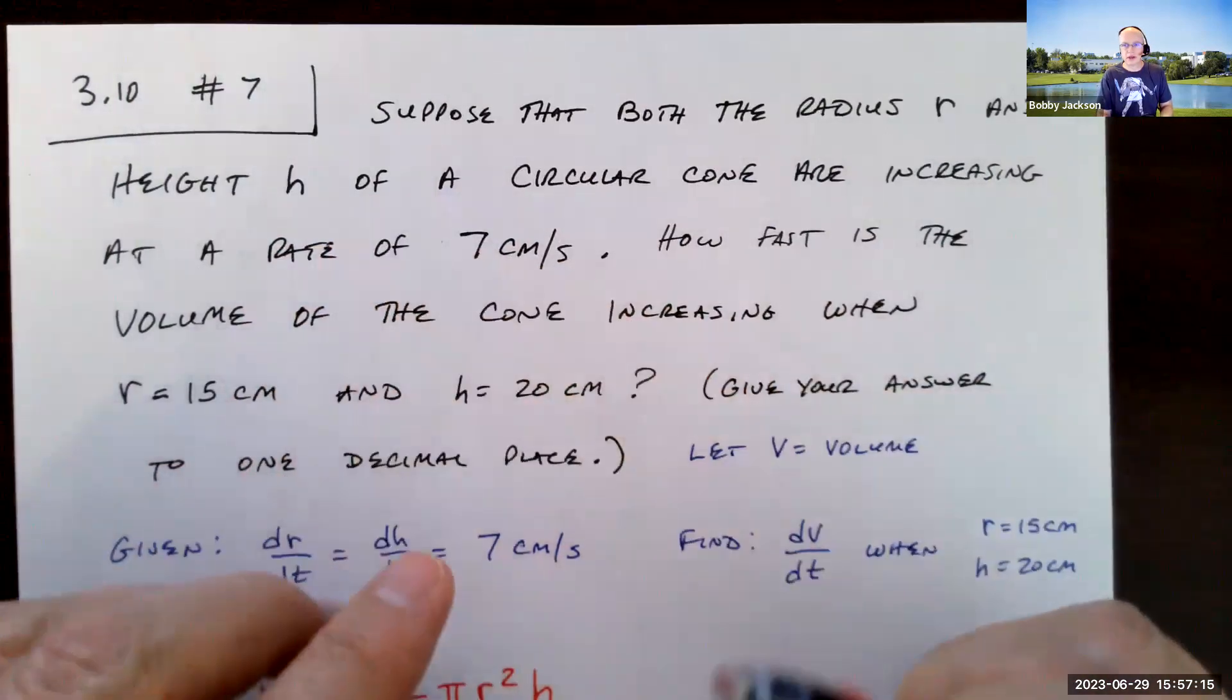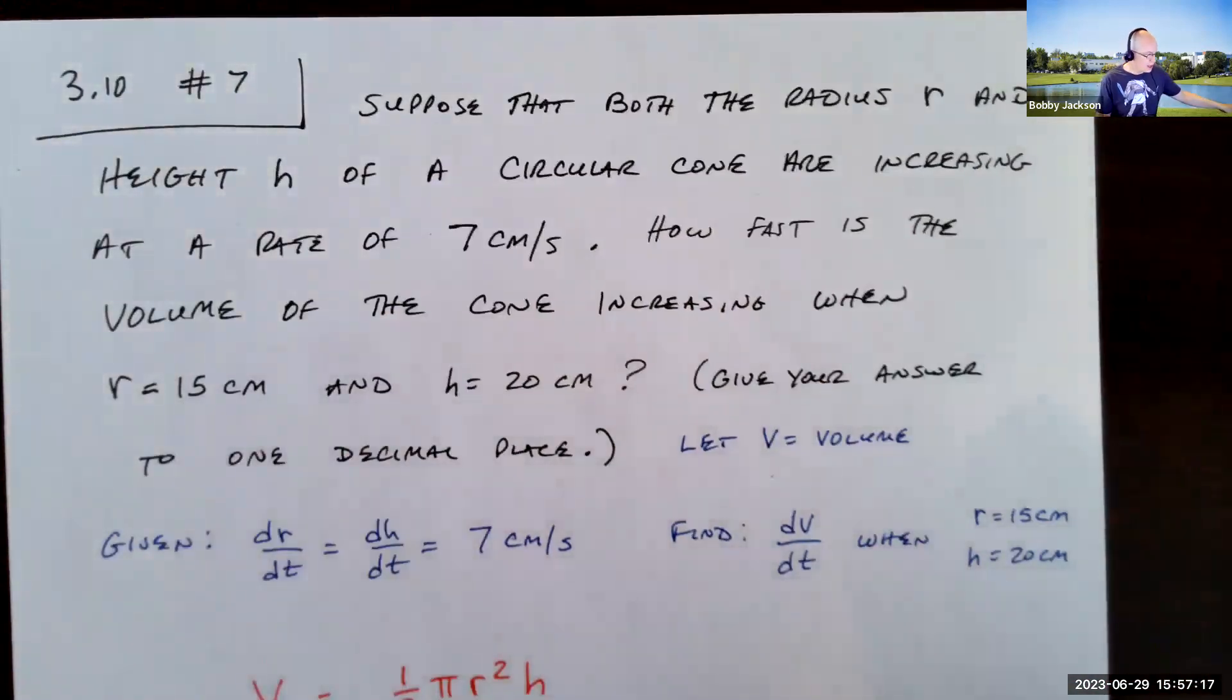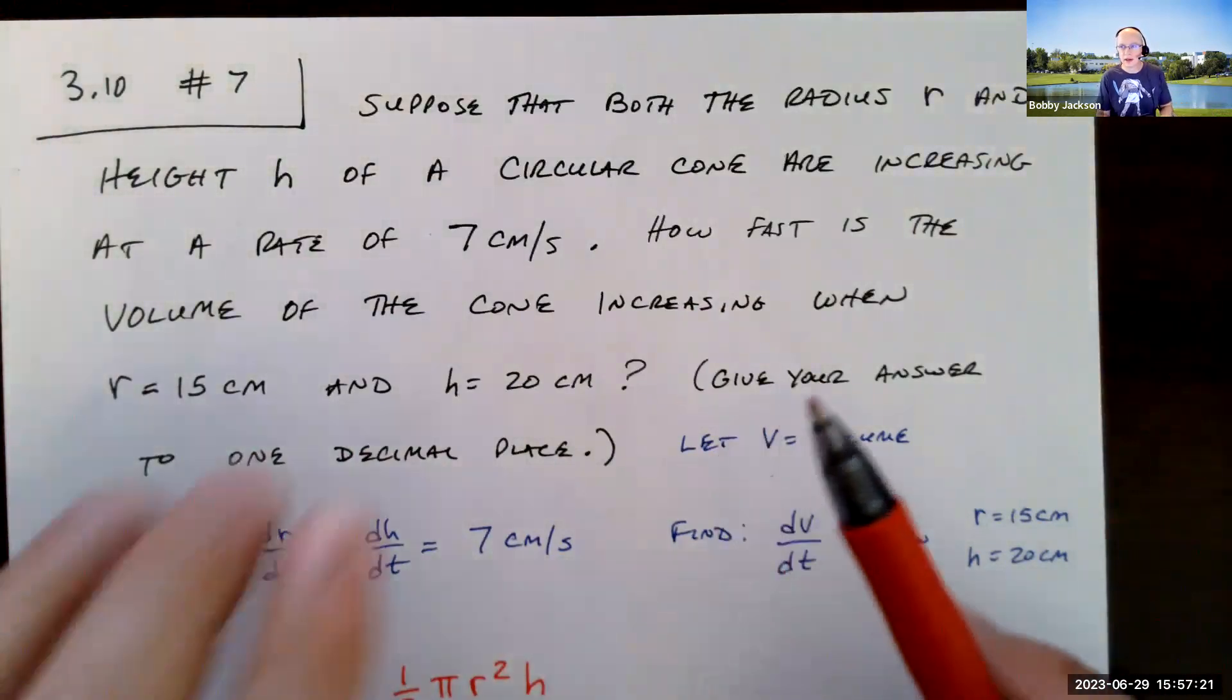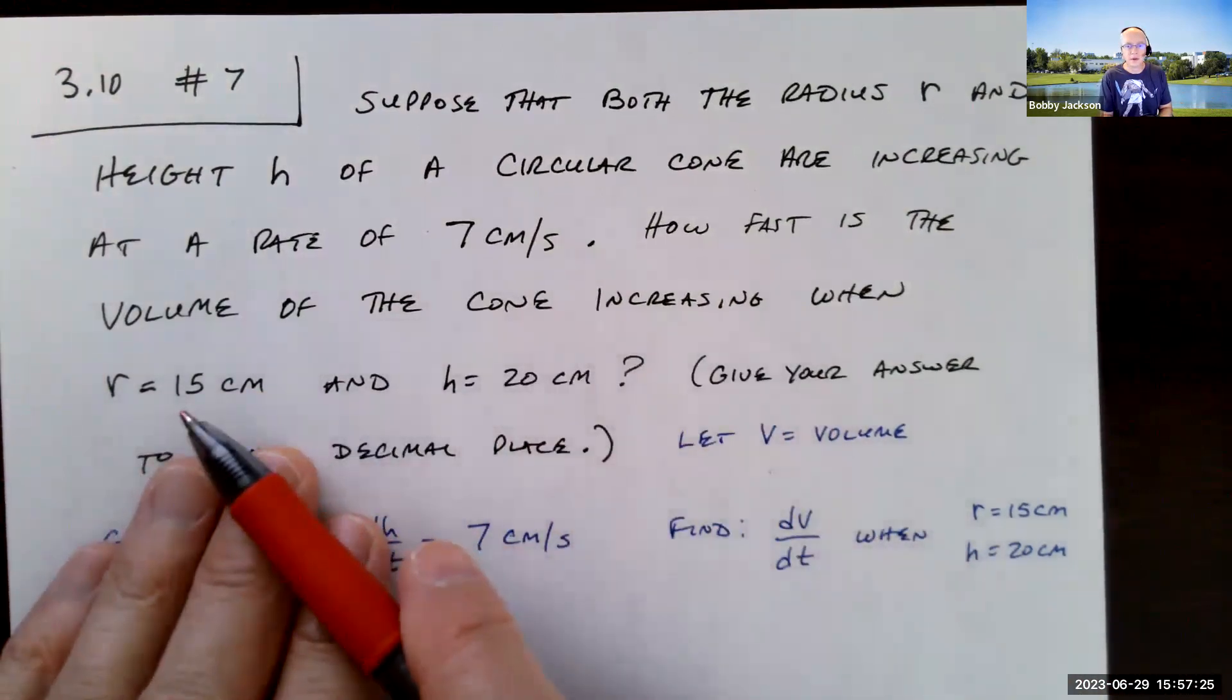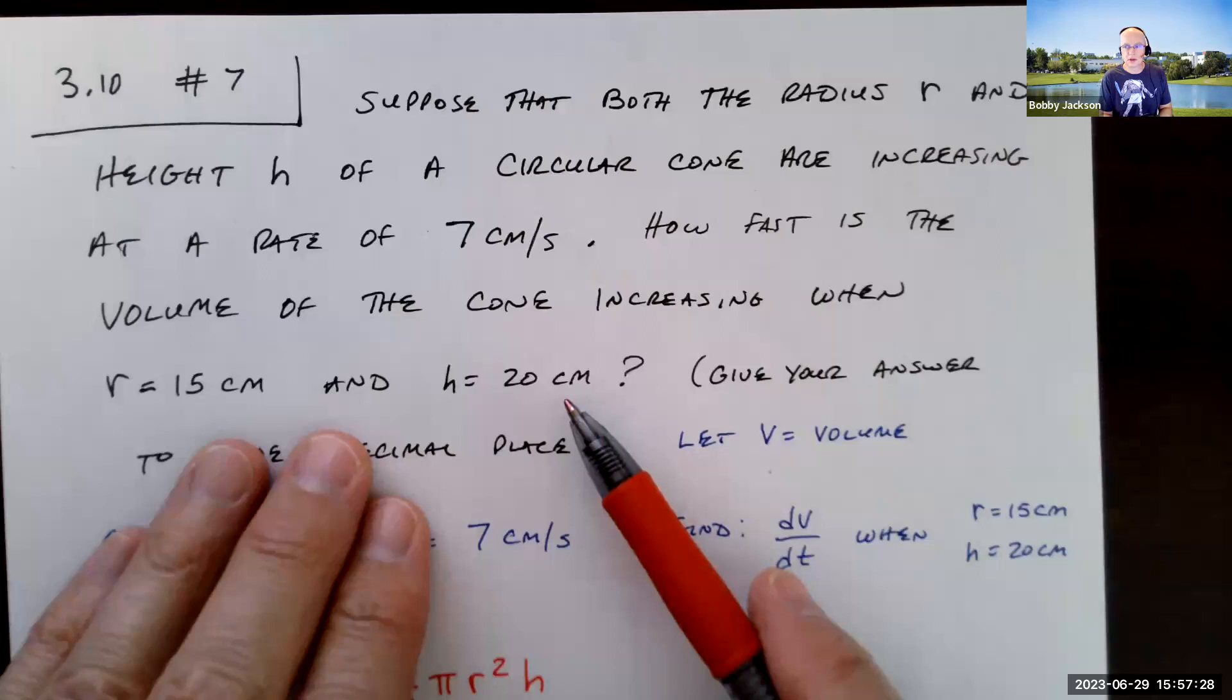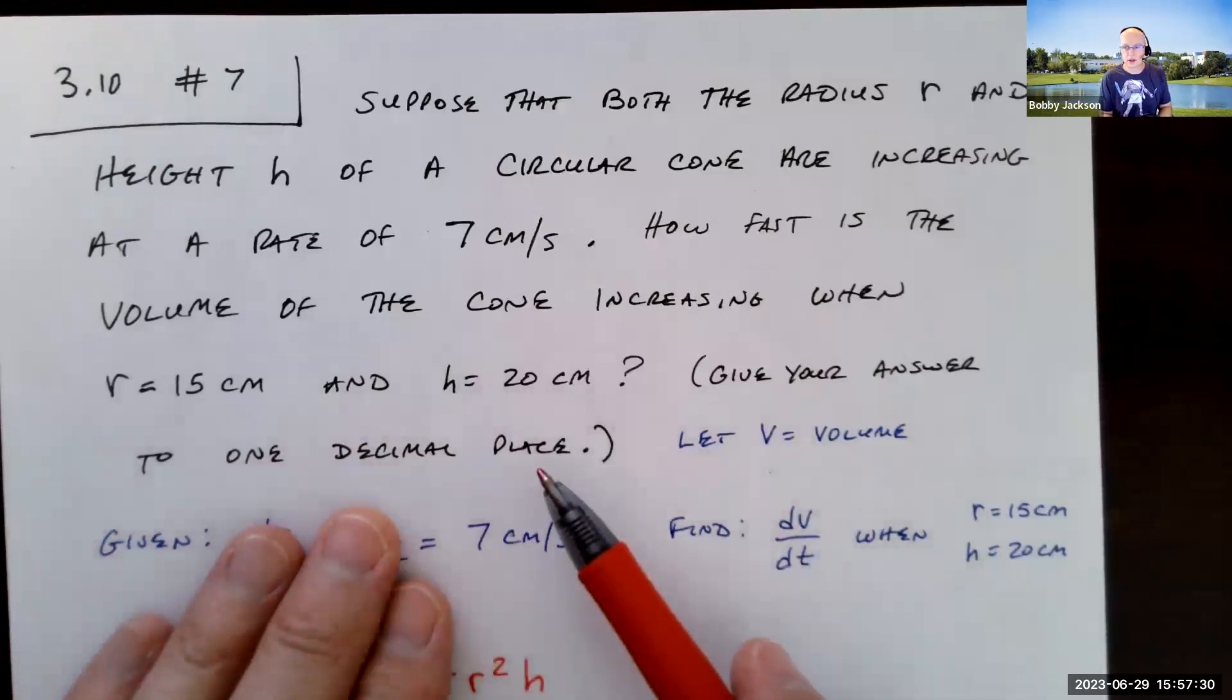So both the base radius of a cone and its height are increasing at the same rate. How fast is the volume of the cone increasing when the radius is 15 centimeters and the height is 20 centimeters? Give your answer to one decimal place.